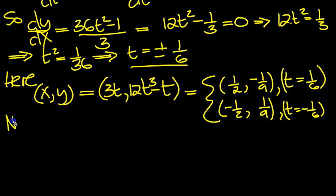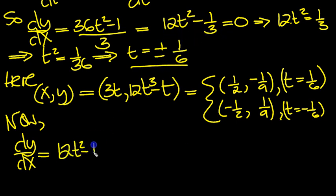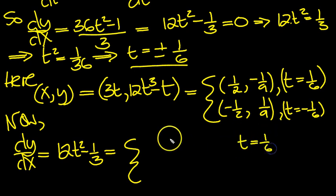So now, dy dx, and let's have a little look at this. This is equal to this value here, 12t squared minus 1 third. Now I'm going to look at it either side. I'm going to look at t equals 1 sixth, but I'm going to look at t just under 1 sixth and t just over 1 sixth. So that's what I mean when I put it in quote marks.